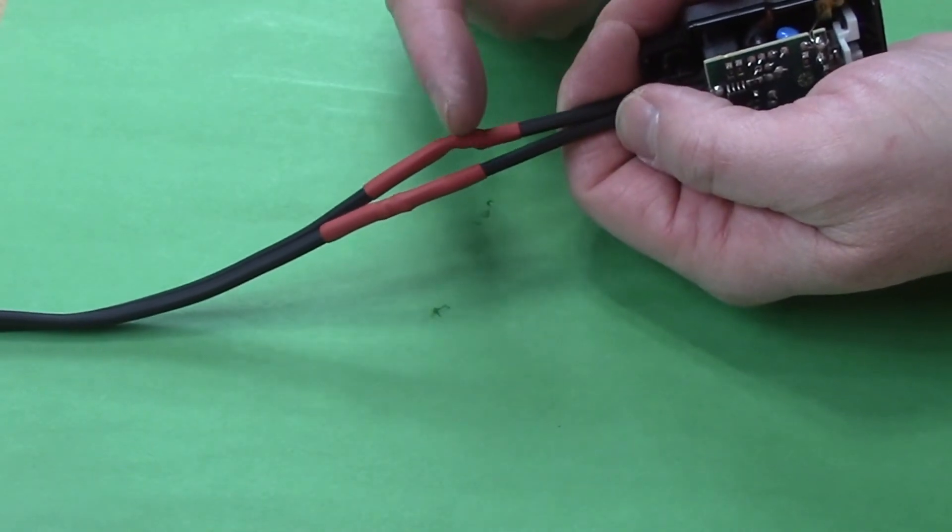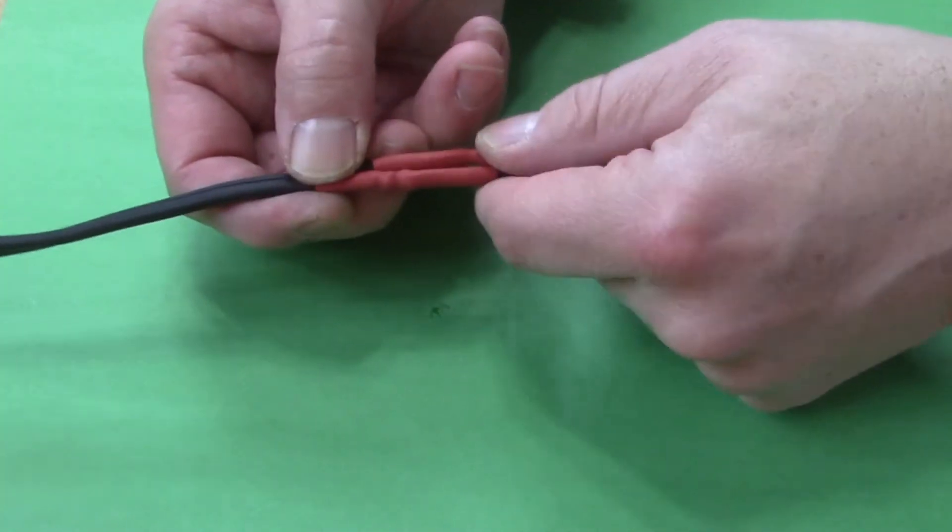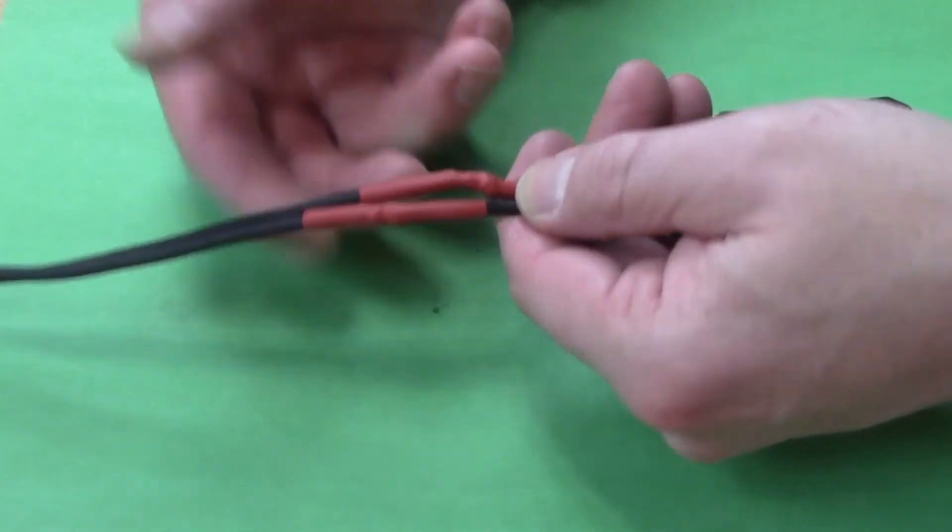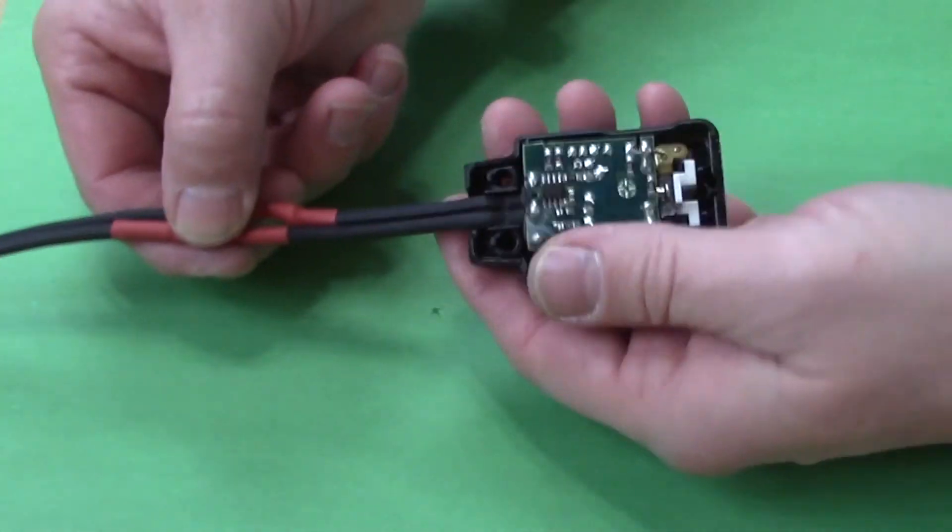Now we have a perfect splice. The joints are separated from each other. No worries about them rubbing together. We don't have a big fat area to tape together. And we don't even need electrical tape since we used the shrink wrap. Now I can put this back together.